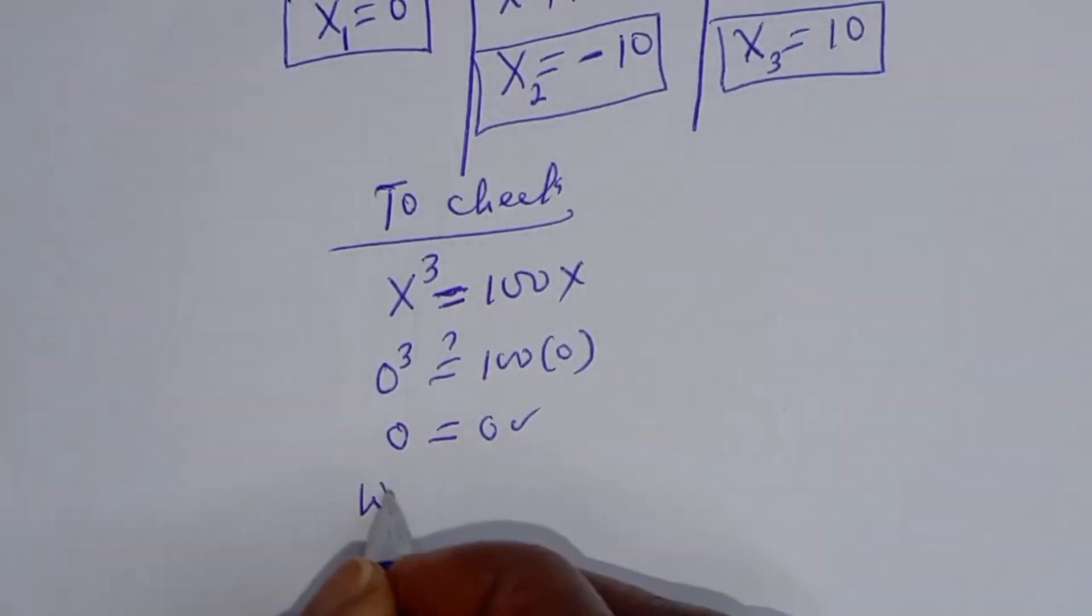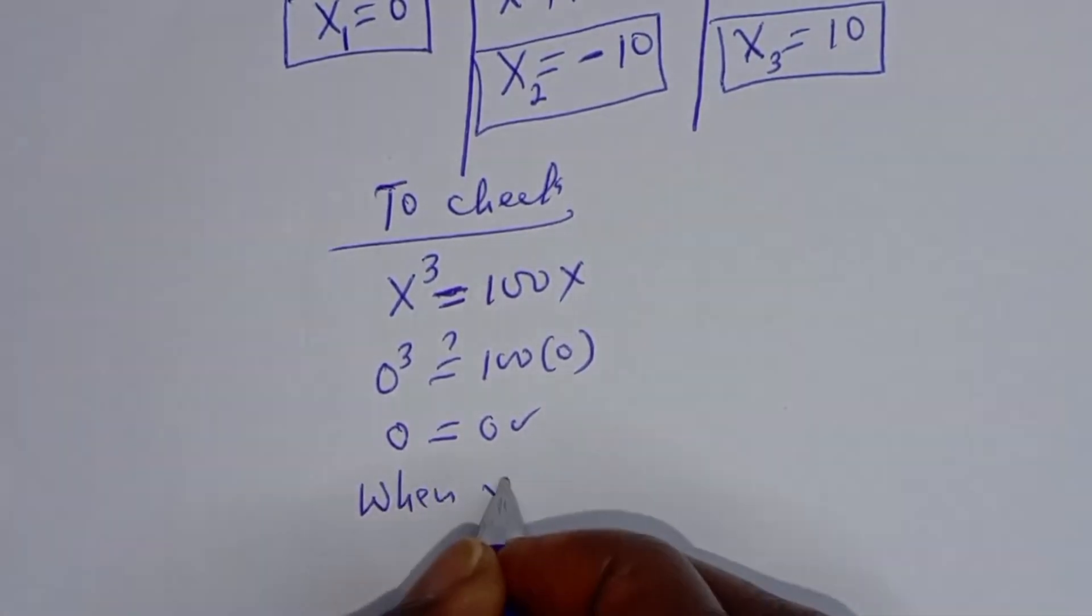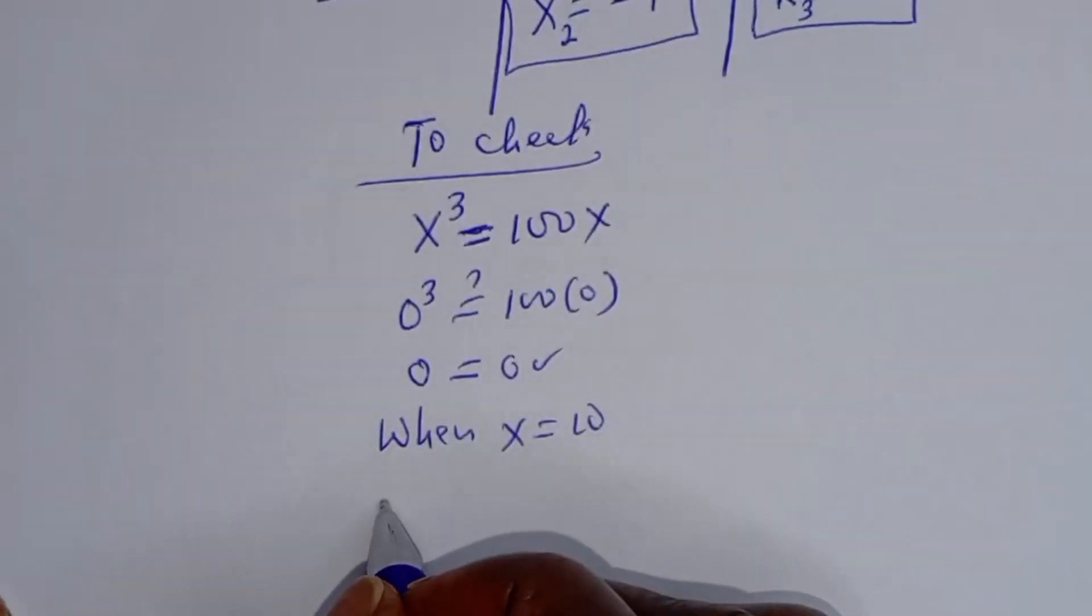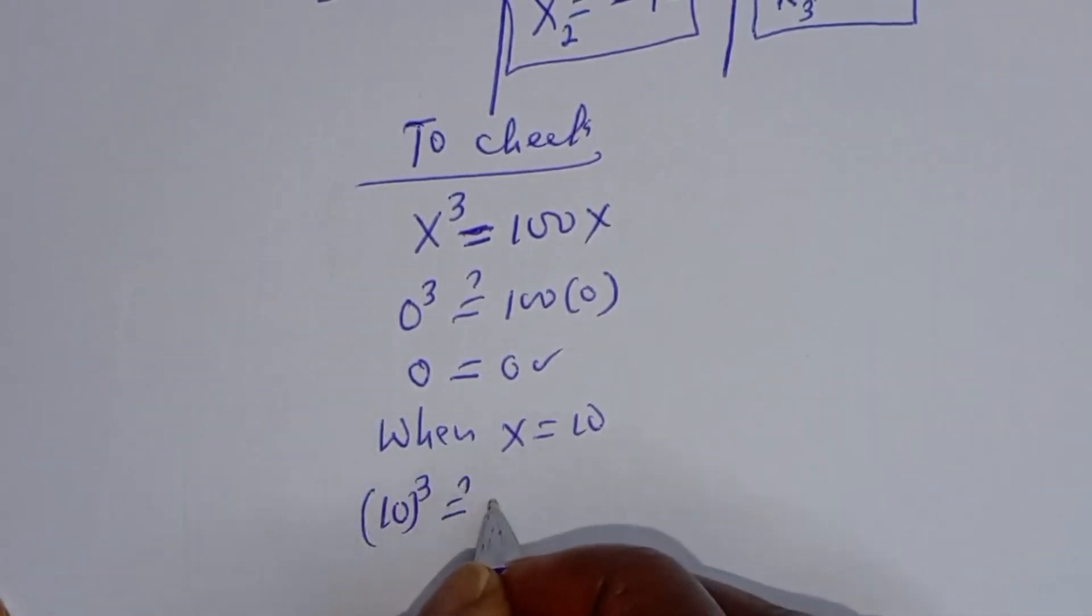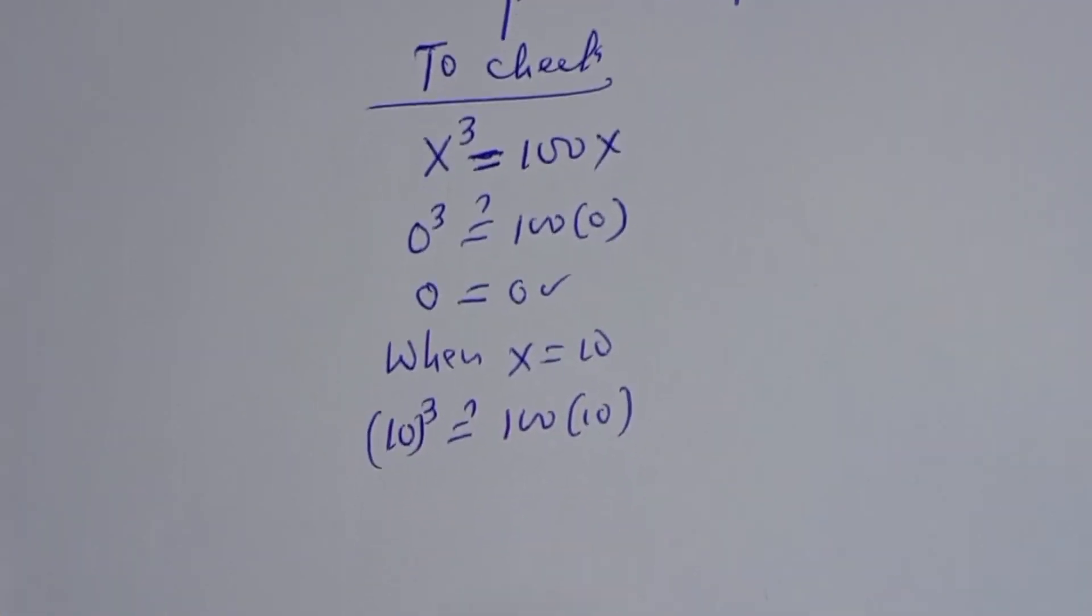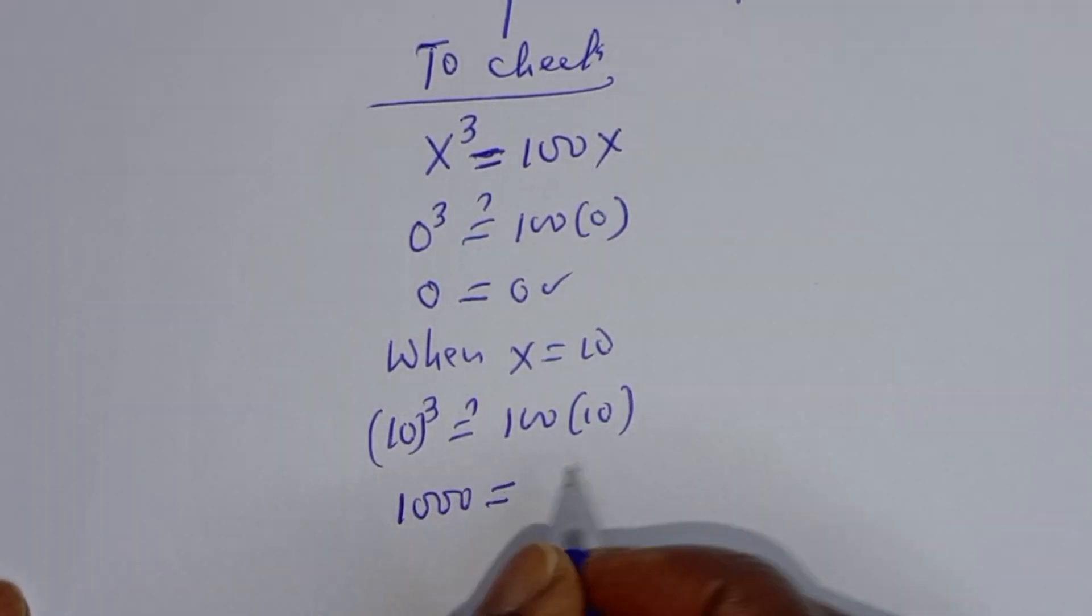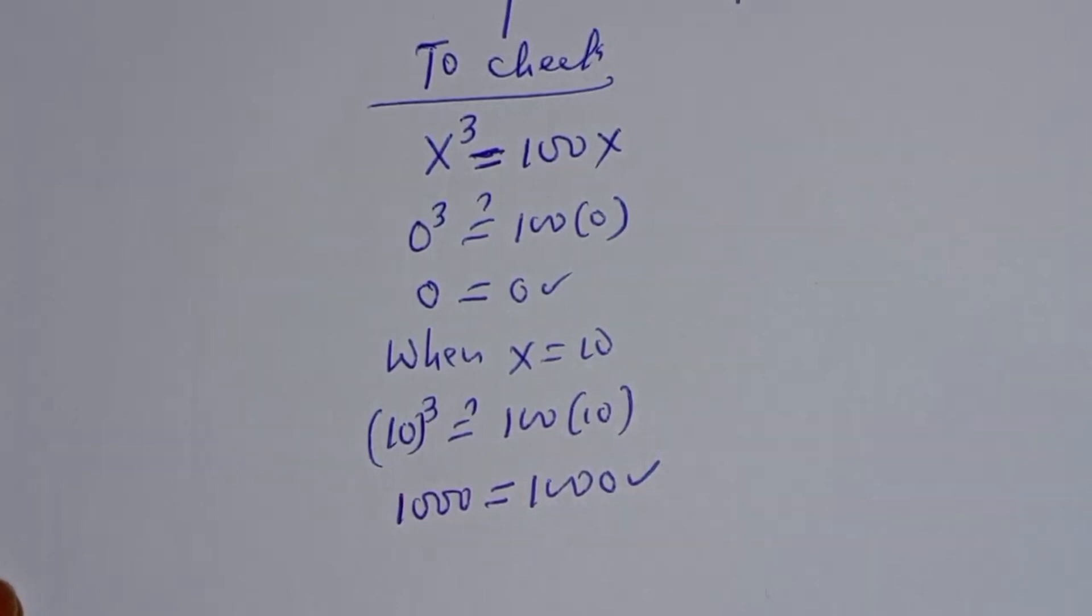When x equals 10, on the left hand side, we have 10 raised to power 3 must equal 100 multiplied by 10. Now 10 raised to power 3 is 1000, which equals 1000. This is true as well.